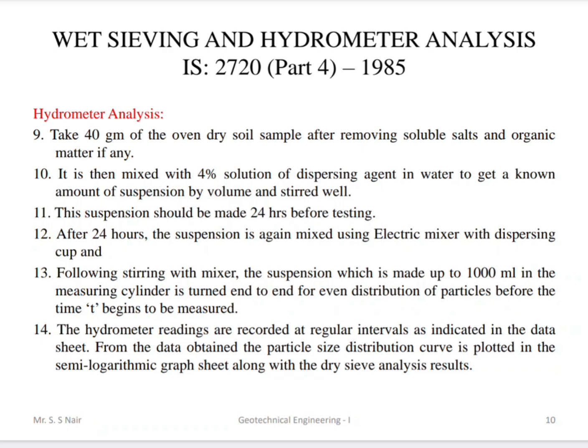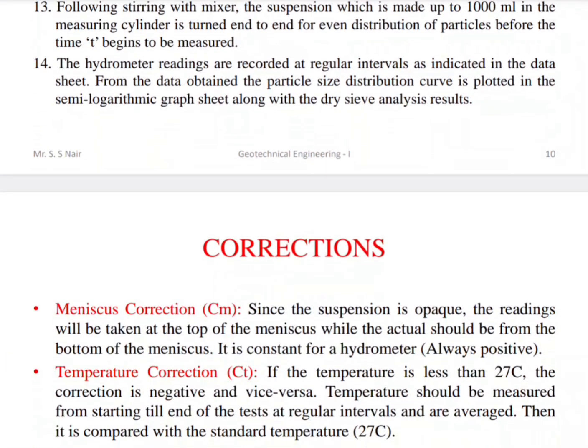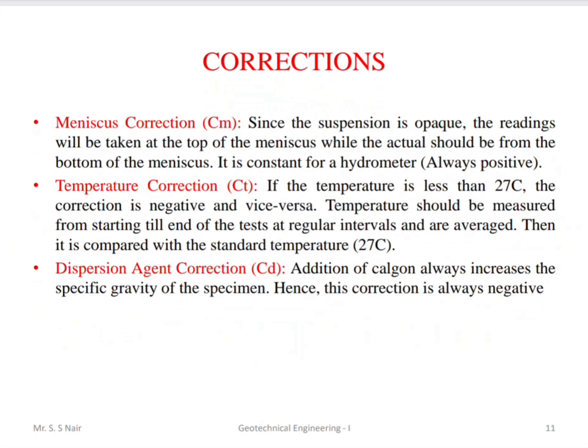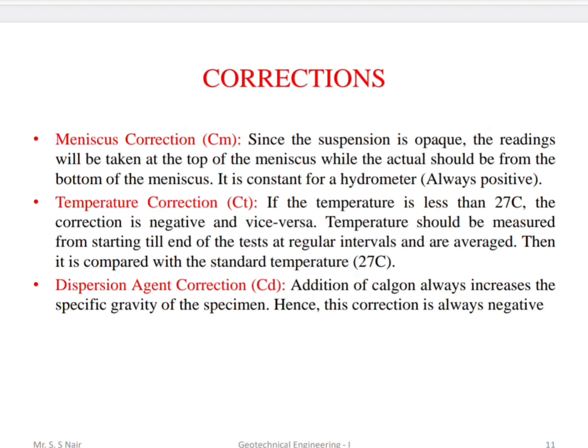To determine the particle size distribution curve, we first apply corrections. The meniscus correction is applied because the suspension is opaque and the reading appears at the top of the meniscus, whereas the actual reading should be at the bottom — so this correction is positive. For temperature correction: below 27°C the correction is negative, and above 27°C it is positive.